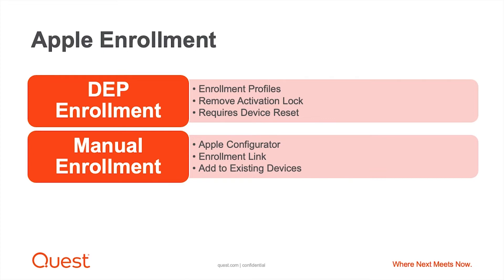The second method for Apple devices is for devices already in use — similar to a BYOD device. You can send somebody a link, they click it, authenticate, and a profile drops on the device along with any configurations or applications you've configured. Apple iOS devices, Apple TV — all of these can be configured and managed via either a manual enrollment or a zero touch type enrollment, which Apple calls DEP.